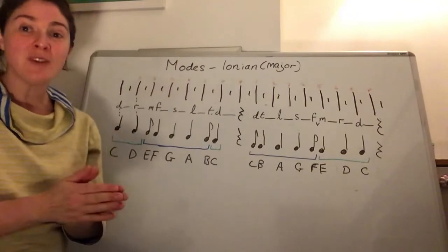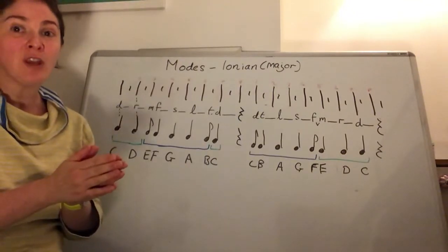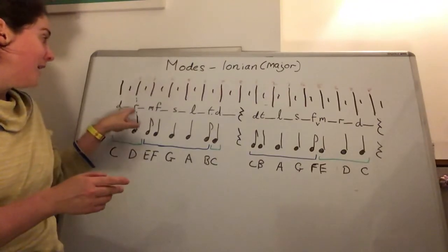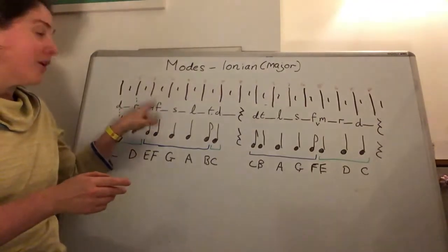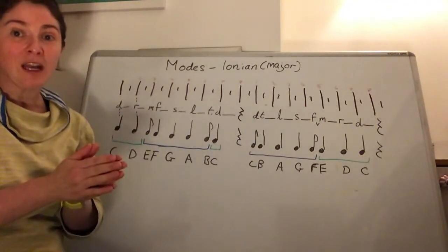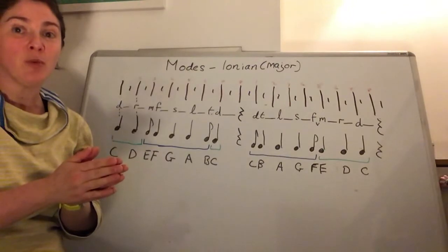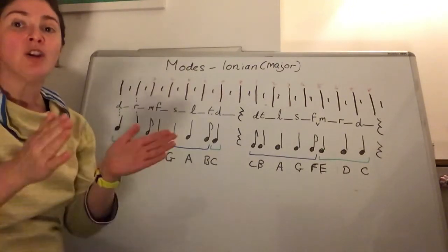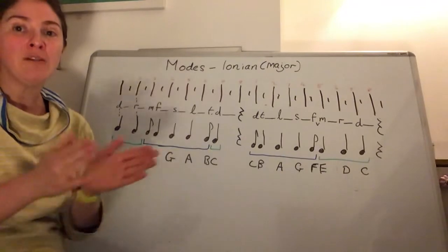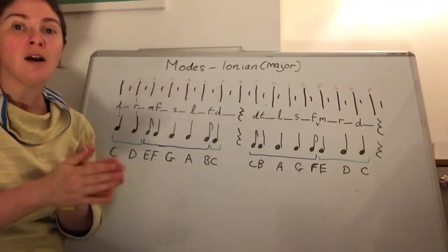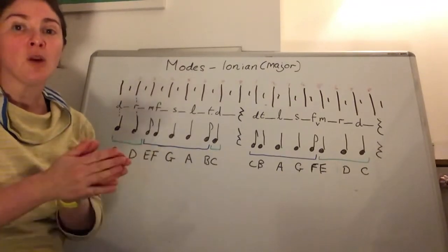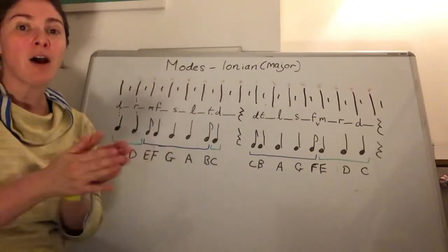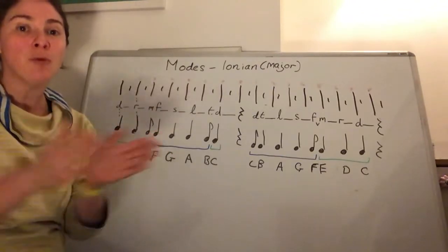I'm going to do it again, but instead of rhythm names I'm going to say the solfège names. You can have a go just clapping the rhythm or saying the rhythm names if you want. One, two, three, four: do, re, mi, fa, so, la, ti, do — do, ti, la, so, fa, mi, re, do.